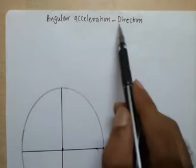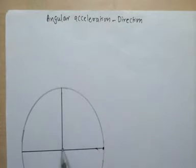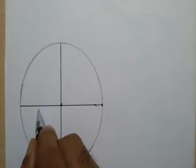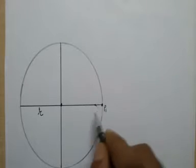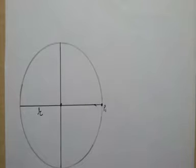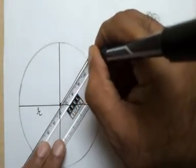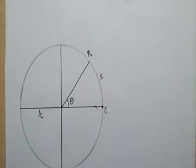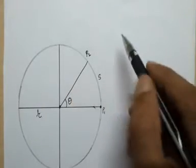In the previous video we looked at angular acceleration and its magnitude. In this video we are trying to understand the direction of angular acceleration. We take up the same situation: a body performing uniform circular motion in a circle of radius r. It is at location p1 and then in time t it moves along the circle and comes to position p2, turning through an angle of theta radians. The arc length covered is s.